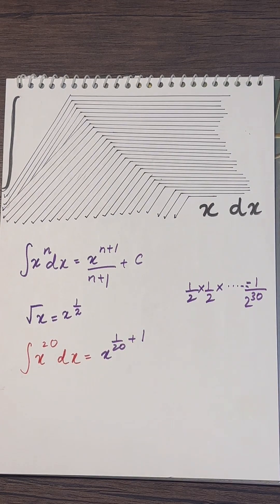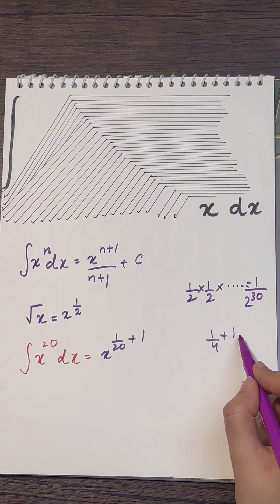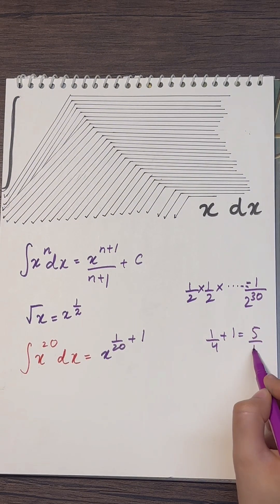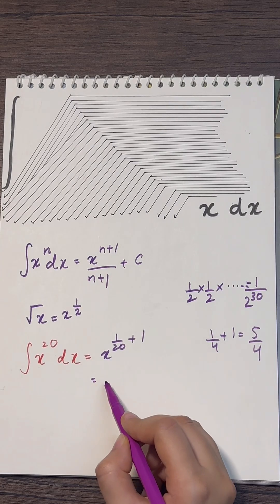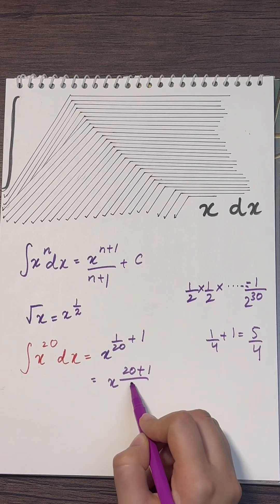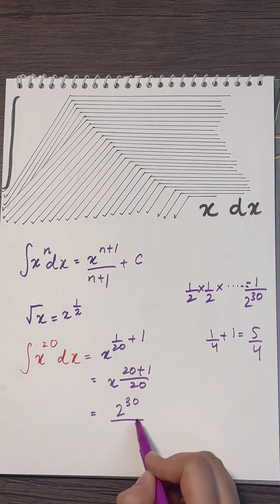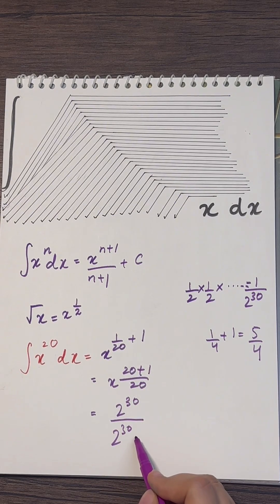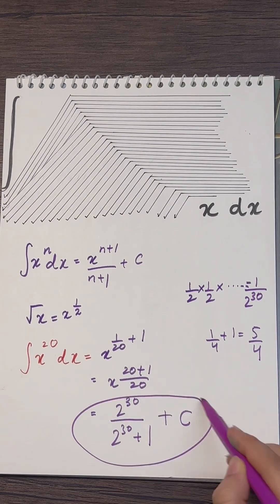Instead of writing it like this, which is going to look a bit horrible, to add these two together I'll give you another example. To add fractions to 1, we just add the numerator into the denominator and keep the denominator the same. So we need to divide by this new power, but instead of dividing I'm going to flip the fraction so it becomes multiplication. I'll have 2 to the power 30 divided by 2 to the power 30 plus 1, and don't forget your plus C. And that, my friend, is your answer.